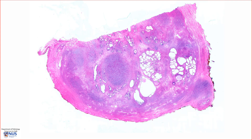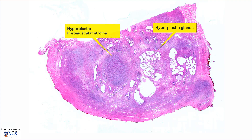What we can see on low magnification is that the prostate gland has a nodular appearance. For example, there is a nodule here composed of cystically dilated glandular structures. There is another nodule here, and over here we can see a quite different looking nodule which is composed of hyperplastic fibromuscular stroma.